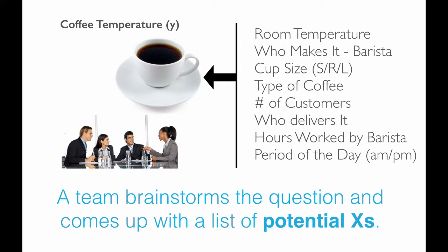In our scenario with the coffee temperature, let's say a team proposes that room temperature affects coffee temperature. They also believe that the different people who make the coffee — the baristas — affect the temperature; some baristas make it colder, some warmer. The cup size makes a difference. The type of coffee being made may have an effect. The number of customers lined up at any point in time, who delivers it from the barista to the customer, the hours worked by the barista, and the period of day — whether it's AM or PM.